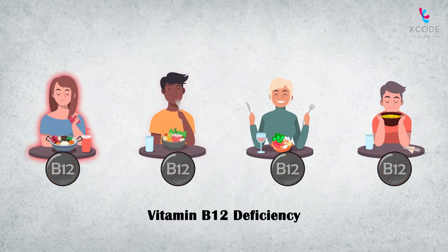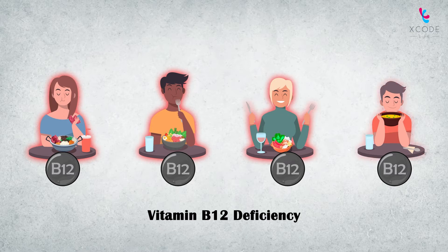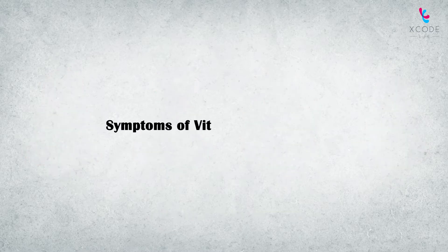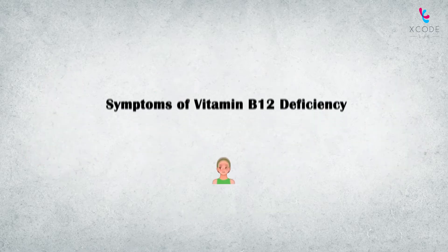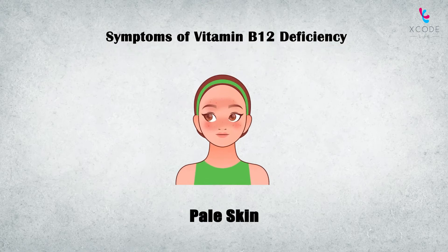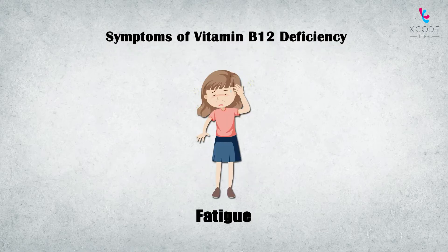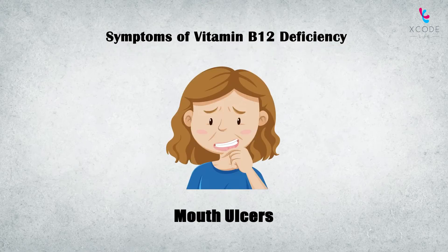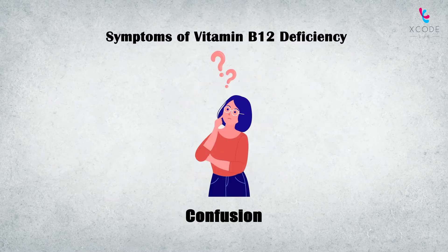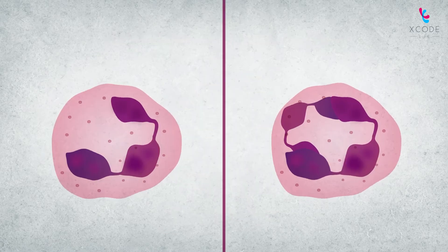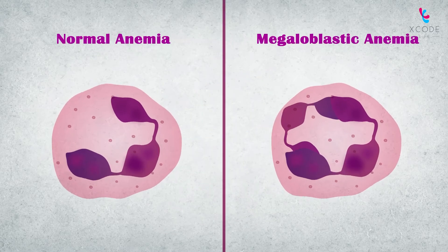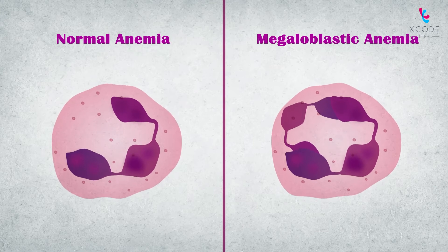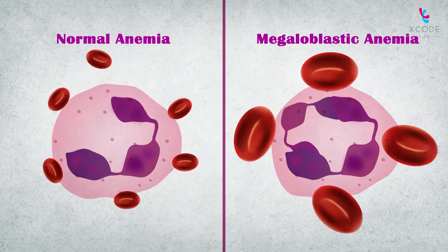People on vegetarian and vegan diets are at an increased risk for vitamin B12 deficiency. Some notable symptoms of vitamin B12 deficiency include pale skin, fatigue, mouth ulcers, mood changes, and confusion. It can also lead to megaloblastic anemia, which is characterized by the circulation of abnormally large red blood cells.